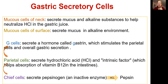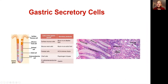In the small intestine, the intrinsic factor and B12 become separated, and only then, under that condition, is B12 absorbed. Hydrochloric acid from parietal cells will also activate pepsinogen that comes from chief cells, converting the inactive pepsinogen into pepsin, which breaks down protein. This is the microscopic picture — this is the surface of the stomach and you can see the mucosal cells here.